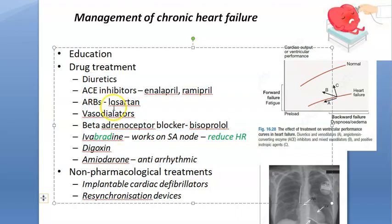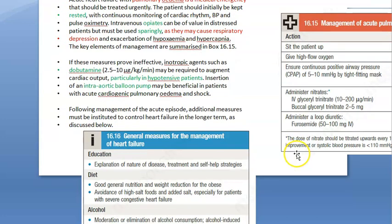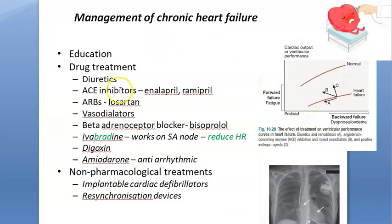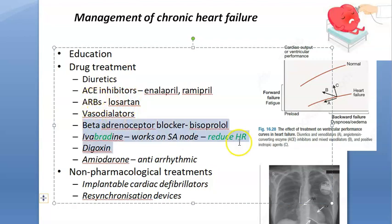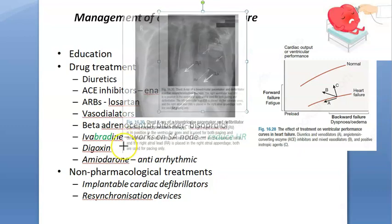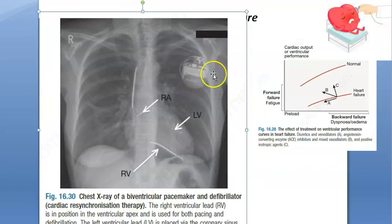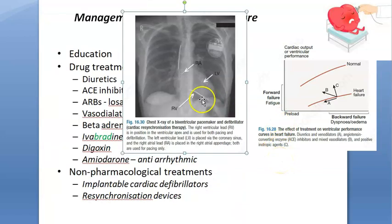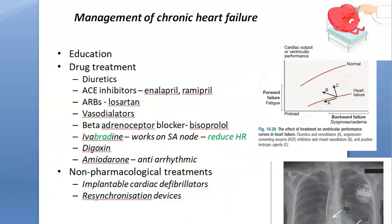Note that ACE inhibitors and ARBs are not given in acute heart failure — in acute, only nitrates and diuretics are given. In chronic heart failure, in addition to diuretics and nitrates, you give ACE inhibitors, ARBs, beta blockers, ivabradine, digoxin, and amiodarone. You can also fit an implantable cardiac defibrillator or resynchronization device.